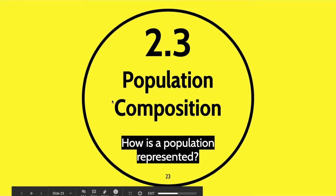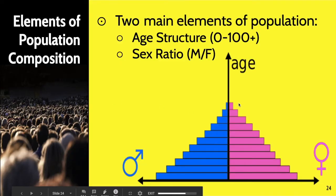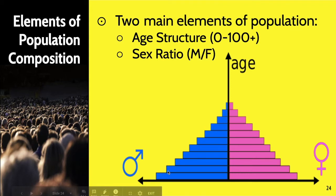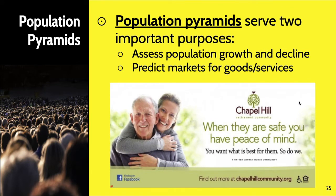Section 2.3 is called Population Composition. When we say composition, we mean the components that make up a population, and the two main components we're looking at today are age and sex. On this diagram, what we call a population pyramid, the y-axis measures age — oldest at the top, youngest at the bottom. On the left you have males broken down by age, and females on the right. There are two main purposes: one is to assess population growth or decline, and two is to predict the types of markets that are going to be needed — the goods and services people will need based on whether there's a large youth population, elderly population, or somewhere in between.